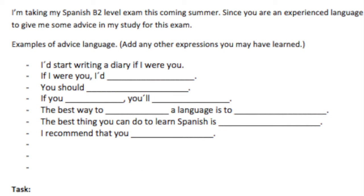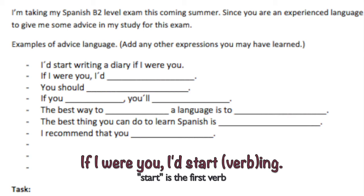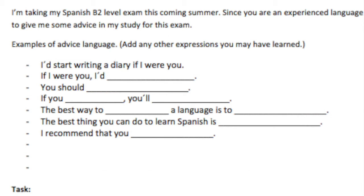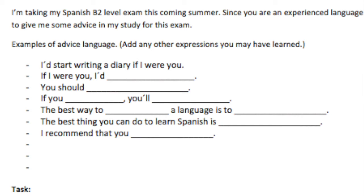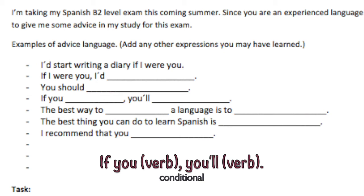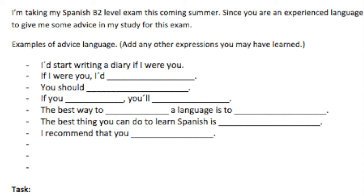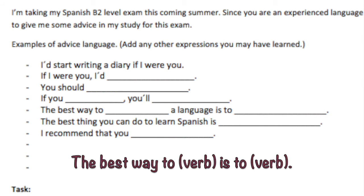Another way, reversed: 'If I were you, I'd write a diary.' You can also use the verb 'start': 'If I were you, I'd start writing a diary' — the -ing form comes after 'start.' Next: 'You should write a diary,' or 'You should start writing a diary.' And: 'If you write a diary, you'll learn faster. If you watch Spanish television, you'll learn vocabulary. If you study on the internet, you'll improve your language.'